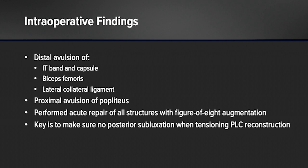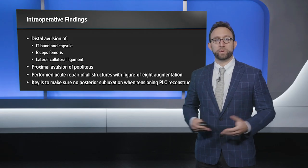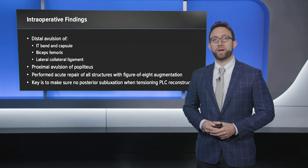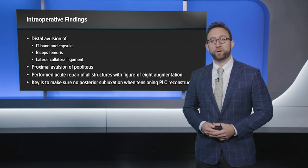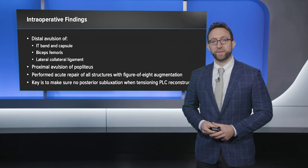Our intraoperative findings included a distal avulsion of the iliotibial band and capsule, a distally-based avulsion of the biceps femoris as well as the lateral collateral ligament, and a proximal avulsion of the popliteus right off the popliteal sulcus. We performed an acute repair of all these structures with figure-of-eight augmentation using tibialis anterior allograft.